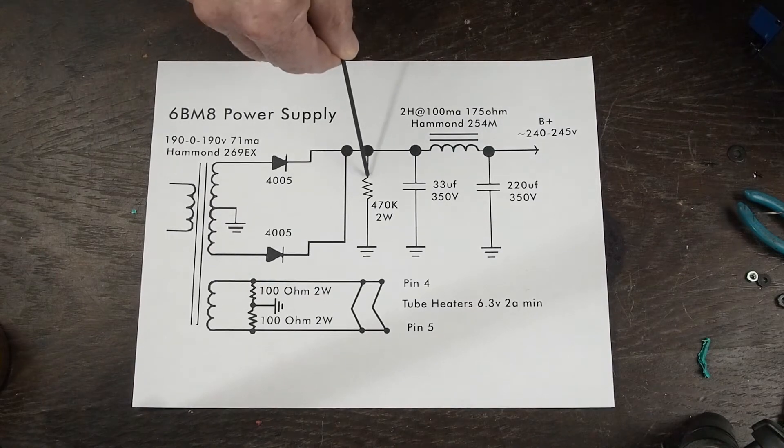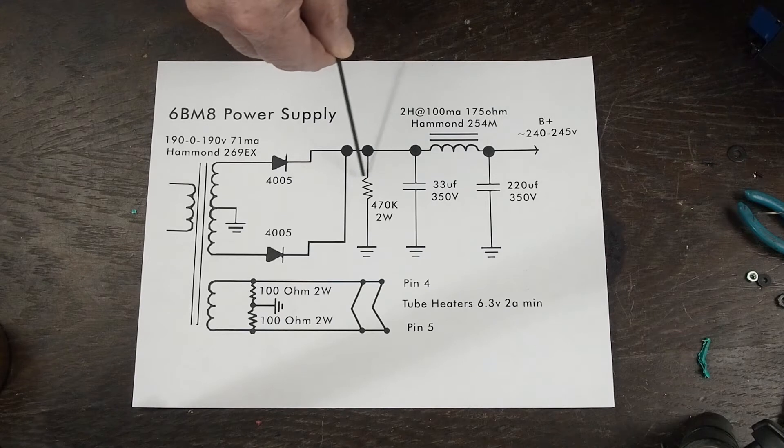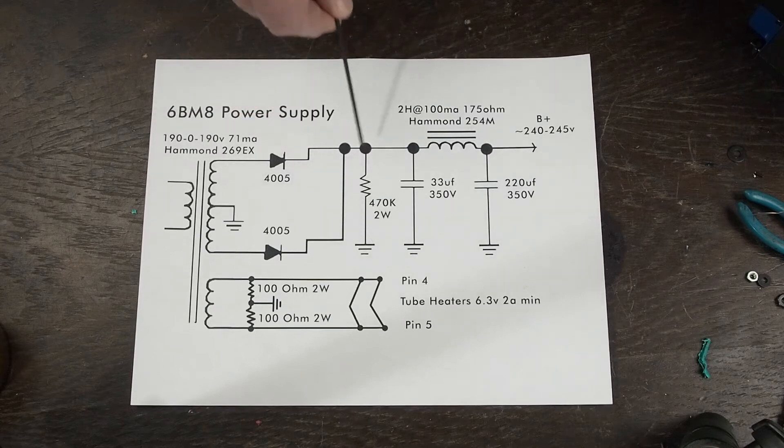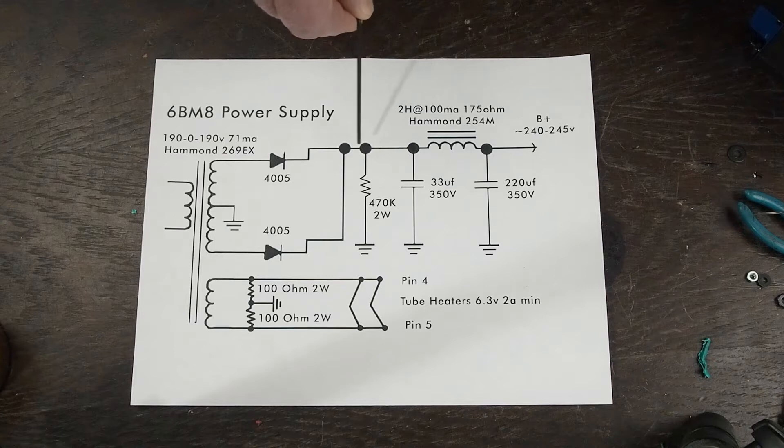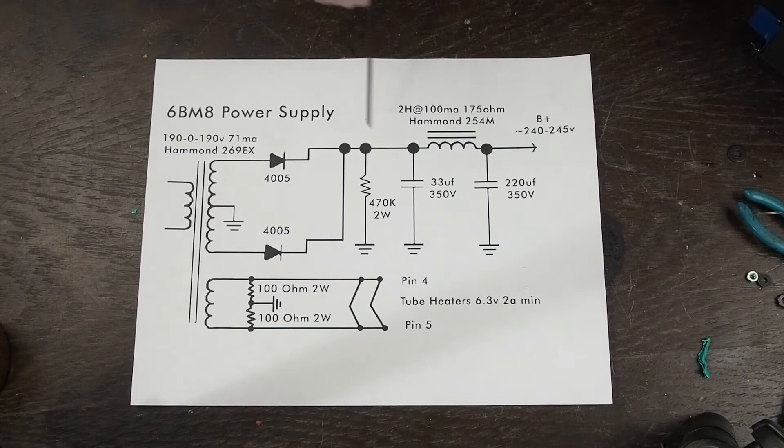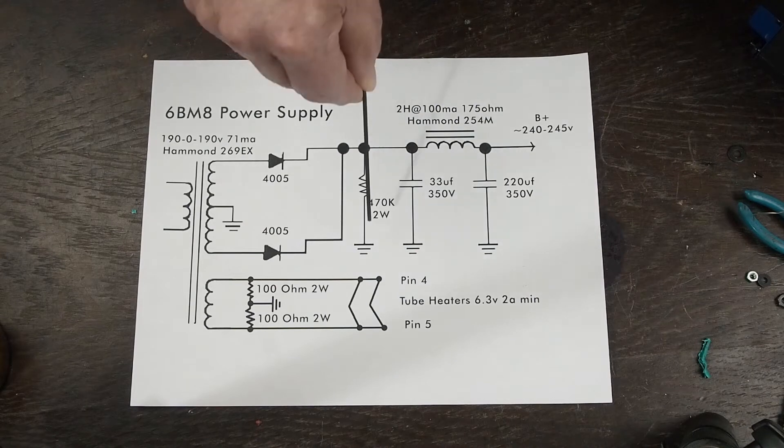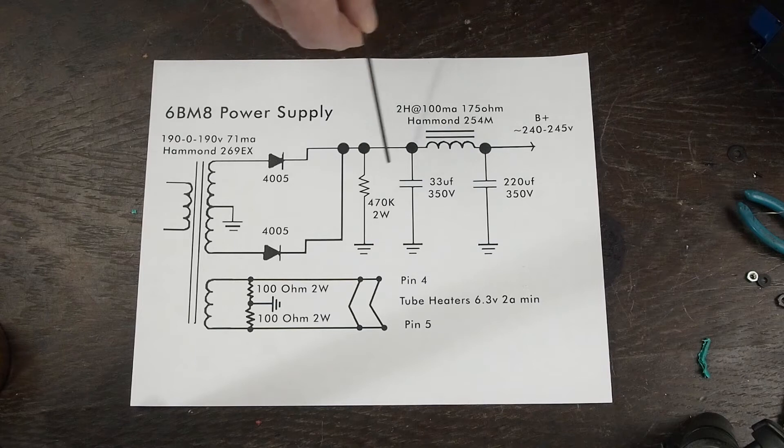This is a resistor called a bleeder resistor that we're putting in the circuit that connects from this point here to ground. The reason that this is in the circuit is we want to have a pathway to ground for these capacitors so that when the power is turned off, especially if there's no tubes in the circuit, that the electricity that's stored in these two capacitors has a pathway to ground so that they drain. Without this resistor in place, these things could stay hot for a long time.